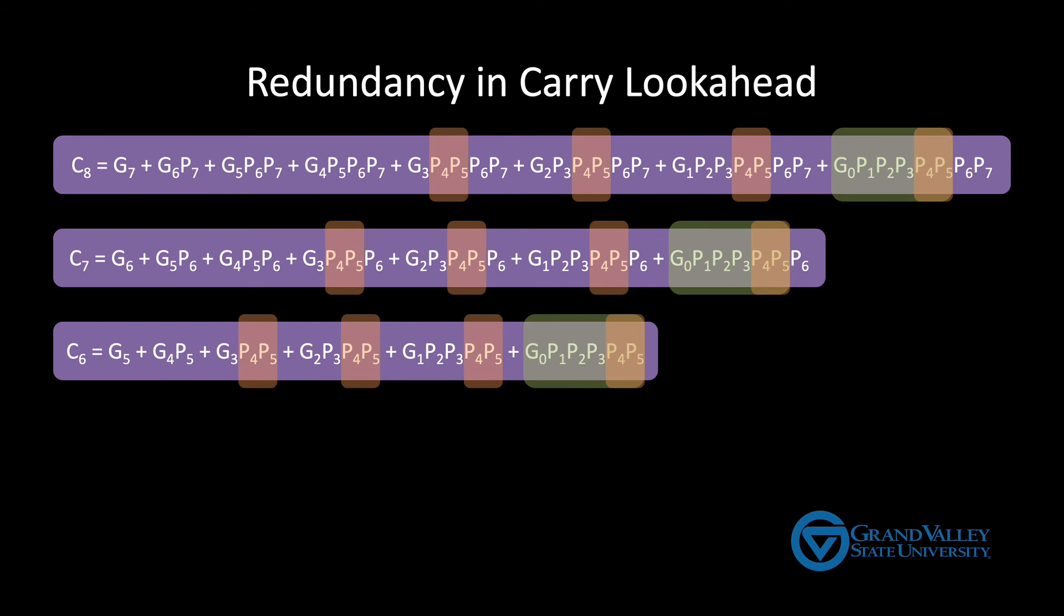For example, if we try to leverage the larger greenish redundancy on the right, we can build this tree. But then, to incorporate it in the logic for C7, we end up adding a gate delay. Likewise, we end up adding yet another gate delay going from C7 to C8.